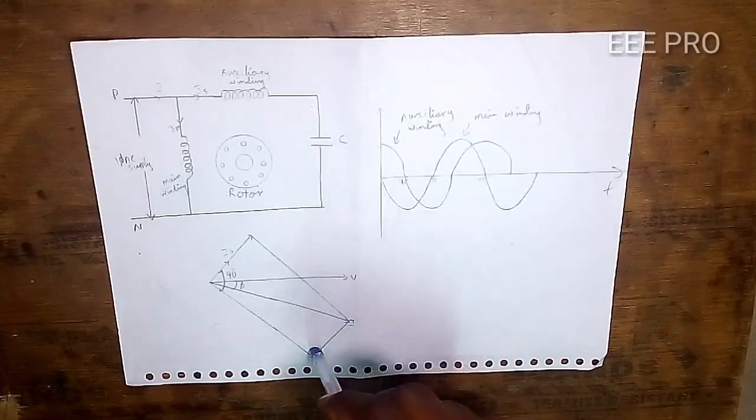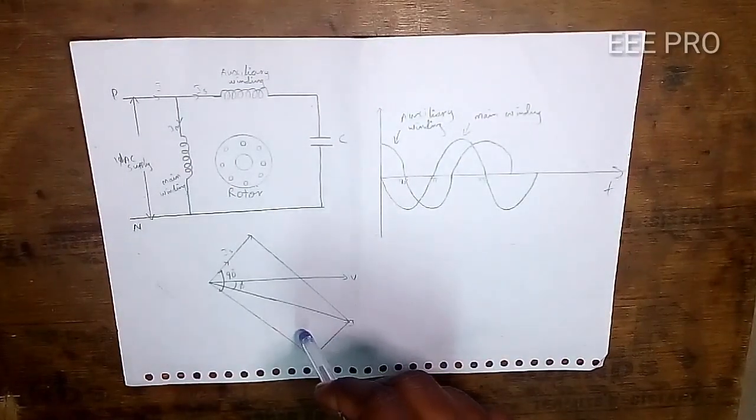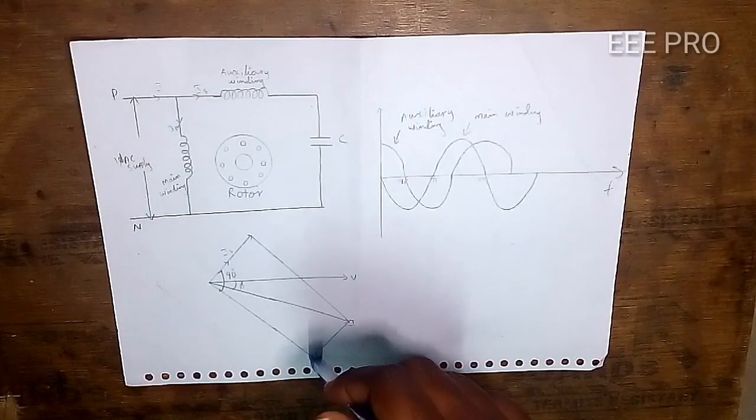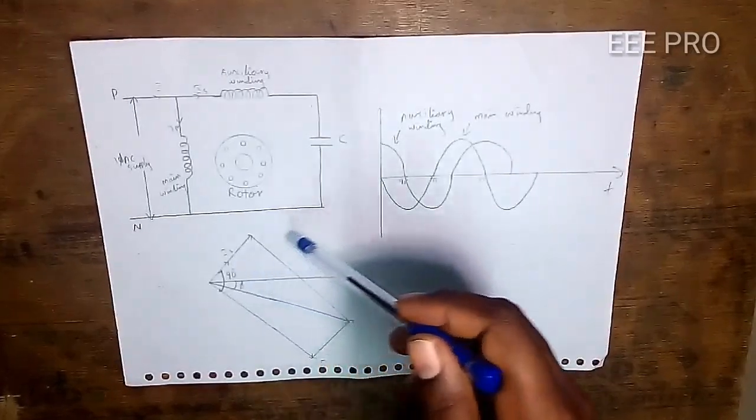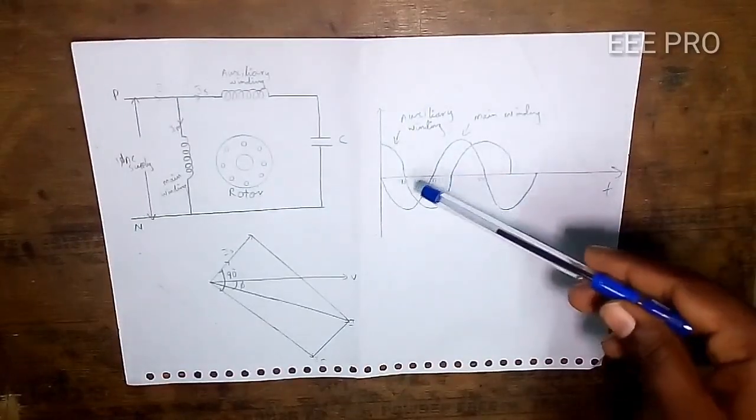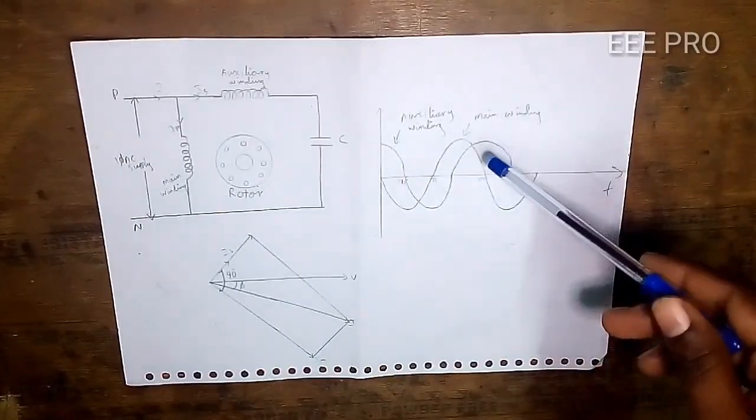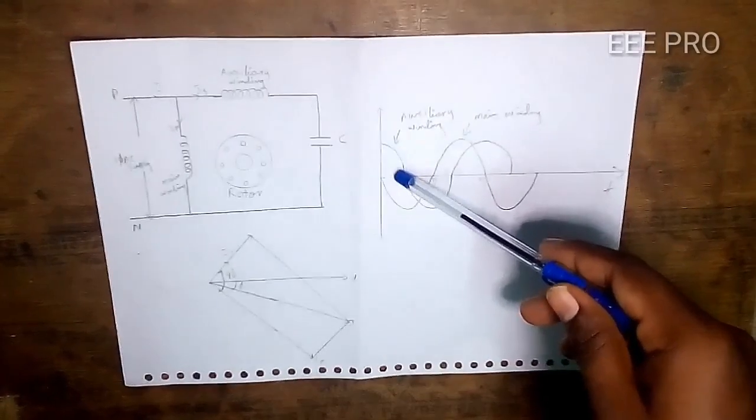The voltage and main winding current are lagging. The phase shift is nearly 90 degrees. Here's the current waveform.